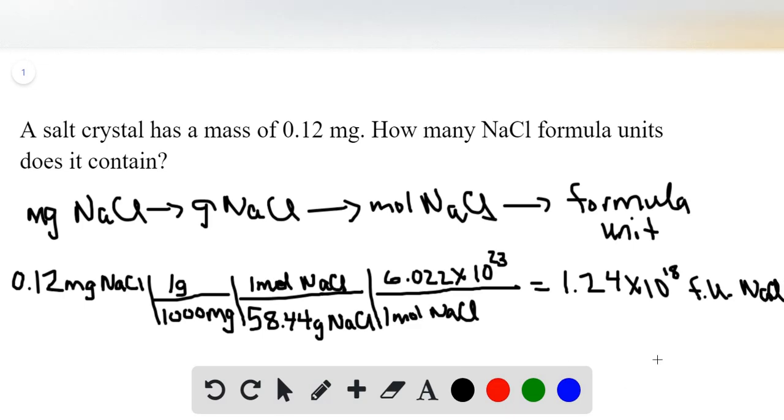Let me just corroborate this. 0.12 divided by 1,000 divided by 58.44 multiplied by 6.022 times 10 to the 23. And the answer is correct.